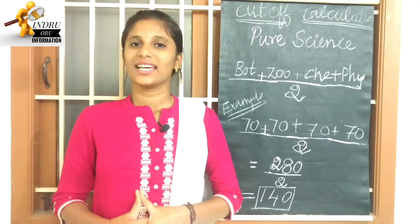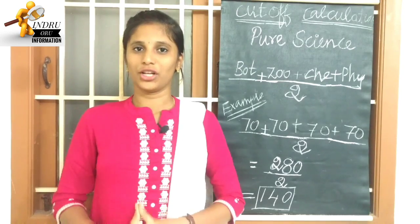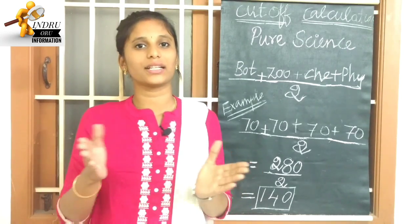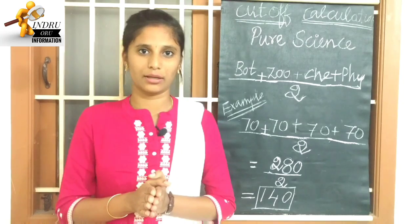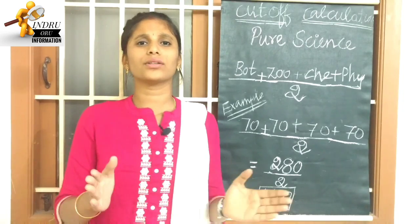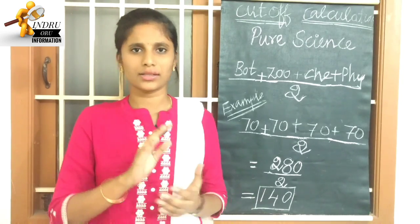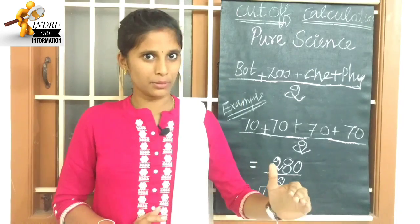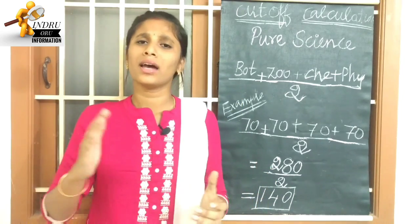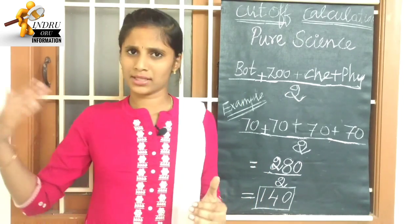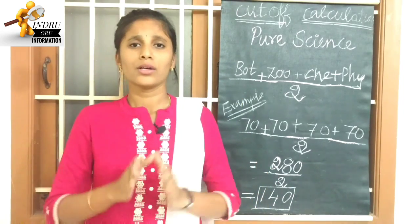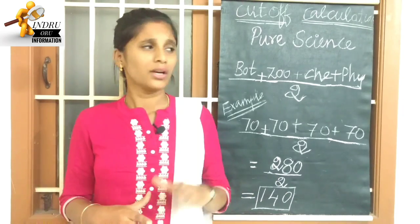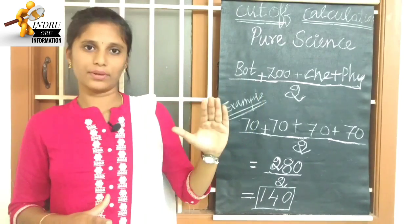Hi Friends! In this video, we will see how to calculate the cut-off for Pure Science students. First, there are 4 subjects in Pure Science. Let's see if we can add botany, zoology, and physics. Let's see how to calculate the cut-off for these 4 subjects. It's simple.